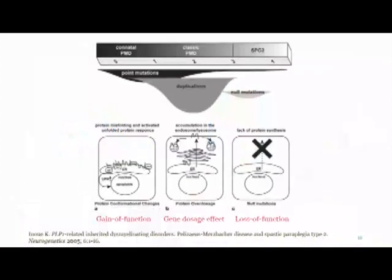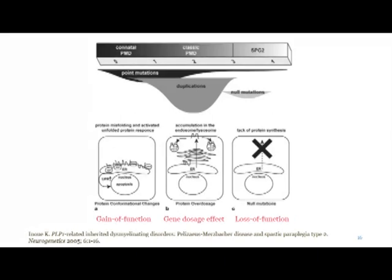Duplications of the PLP1 gene are the most common defect in this disorder. Therefore, the recommended initial genetic screening test, if you are concerned specifically for Pelizaeus-Merzbacher, is actually a microarray which covers the PLP1 locus. Deletions actually account for less than 2% of PMD cases. I'm going to show you data next on some therapeutic strategies that might be helpful in this disorder.